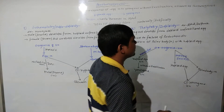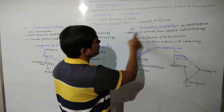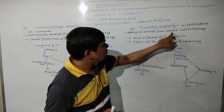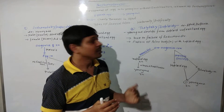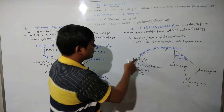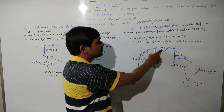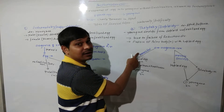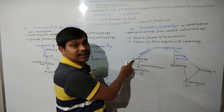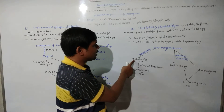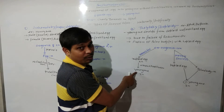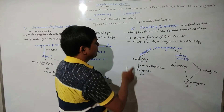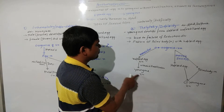In Thelytoky, examples are Aphid and Daphnia. Here, the young one develops from a diploid unfertilized egg. The Oogonia, which is the egg mother cell from the female side, is diploid and it undergoes the process of meiosis. However, the resultant is a diploid egg cell — the female gamete without fertilization — from which a young one may develop.